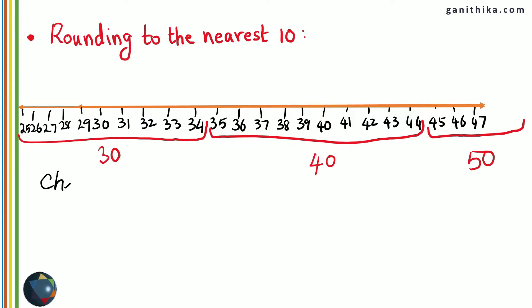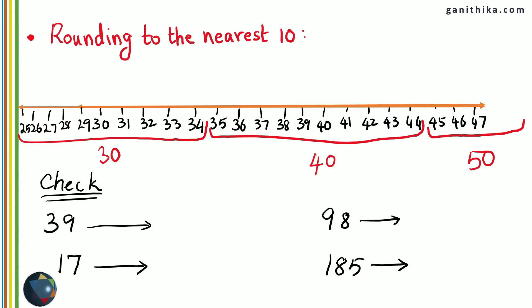I hope you understood this, but let's check. Round these off to the nearest 10s — I am giving you a pause. 39 rounding off to nearest 10 would be 40 — very close to 40, therefore this will be rounded off to 40. 17 is rounded off to 20 because it's closer to 20 than to 10. Any number above 15 all the way up to 24 will be rounded off to 20.